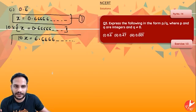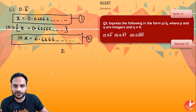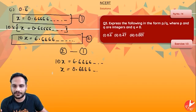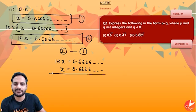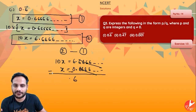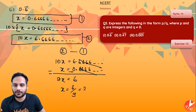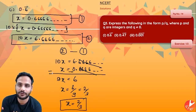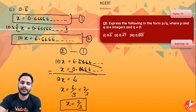Doing equation 2 minus equation 1: 10x = 6.6666... minus x = 0.6666..., so 9x = 6. Therefore x = 6/9, which simplifies to 2/3. So the p/q form for 0.6666... is 2/3.